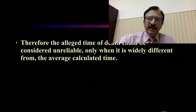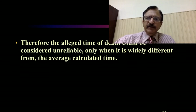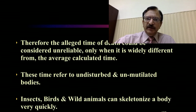Therefore, the exact time of death is not a reliable criteria based on these changes alone. We can only have an idea by studying various changes, and an average time is calculated from those changes occurring in the body. The time refers to undisturbed and unmutilated bodies. Insects, birds, and wild animals can skeletonize the body much more quickly.